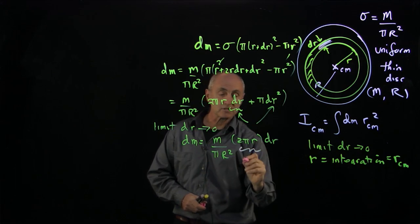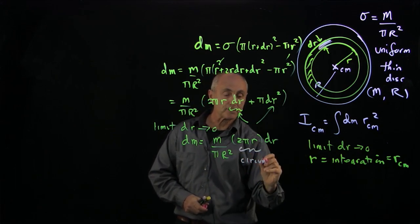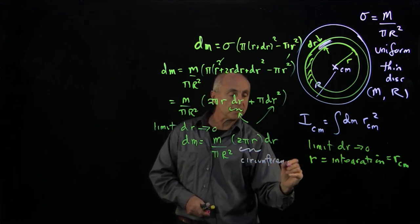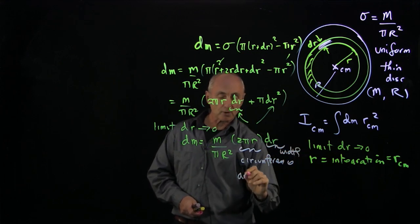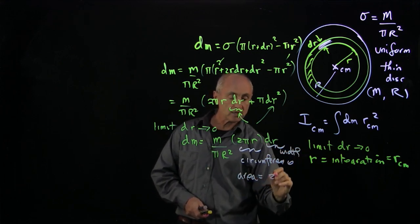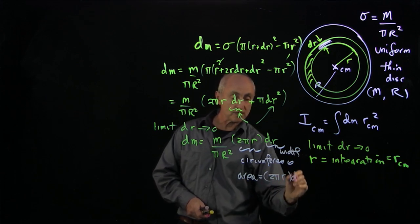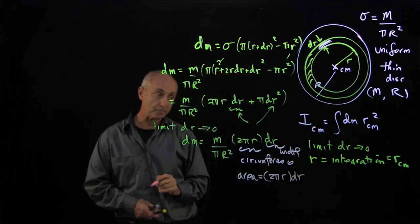Then this piece is a circumference, and this piece is just the width. And so it's no surprise that area is 2πr times dr in the limit.